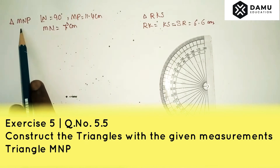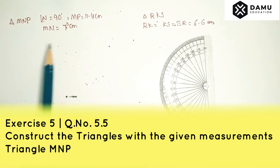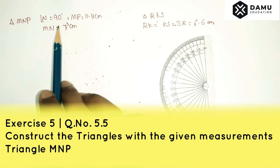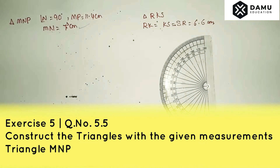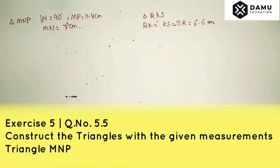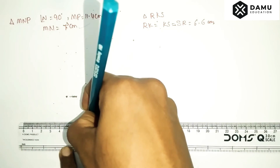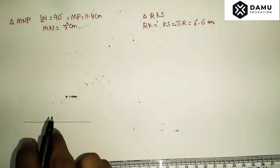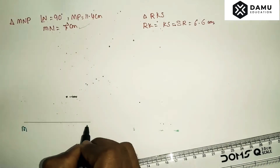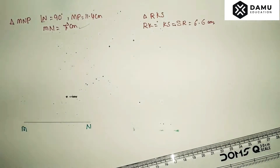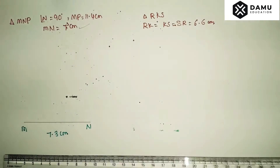In the next question we construct triangle MNP where angle N equals 90 degrees, MP equals 11.4 centimeters, and MN equals 7.3 centimeters. Since angle N is given, we draw the line segment MN first. Keep your scale horizontally and draw one line segment of 7.3 centimeters — that is MN equals 7.3 centimeters.